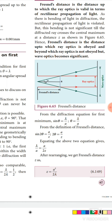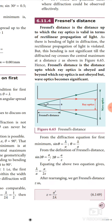Here I consider one slit and one light source. When will diffraction happen? Diffraction takes place when the wavelength of the light is just comparable to the width of the slit. Only in that case does diffraction take place. That means diffraction will happen when the wavelength is comparable to the slit width.